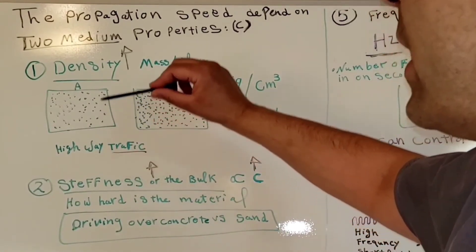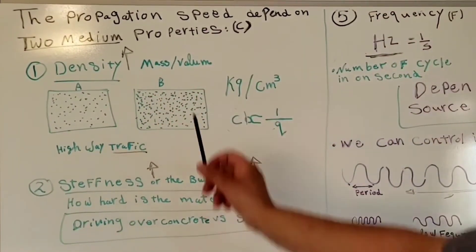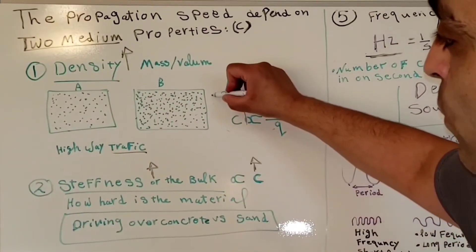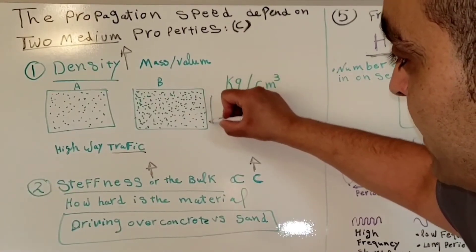...the speed limit will increase. Since in propagation when you have more density, the speed limit decreases.